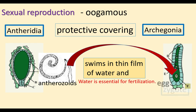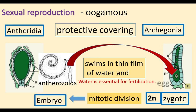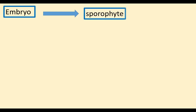The fertilized egg is called a zygote. It is diploid and is the first cell of the sporophytic generation. This diploid zygote undergoes mitotic division to produce the embryo, which is also diploid and part of the sporophytic generation. The embryo is a multicellular structure that divides again to produce the sporophyte.